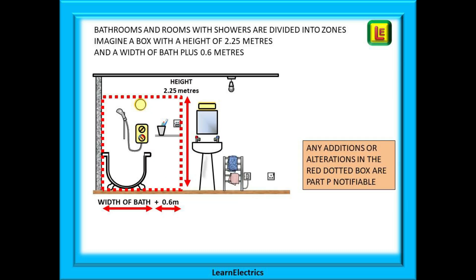Bathrooms and rooms with showers are divided into zones. Imagine a box that is 2.25 metres high and with a width that is the width of the bath plus 0.6 metres. If the bath was 0.68 metres in width, that would make our box 1.28 metres wide. Part P will apply to any alterations and additions that take place in this box measuring 2.25 metres high and 1.28 metres wide.